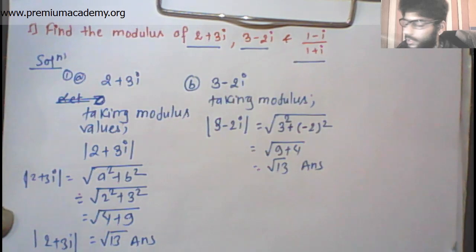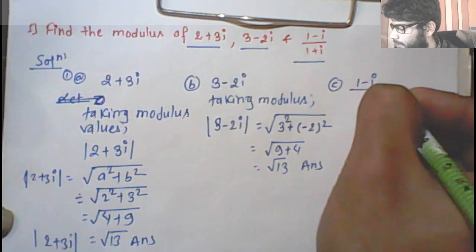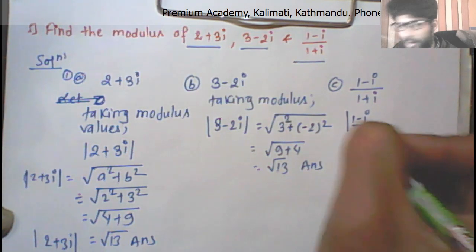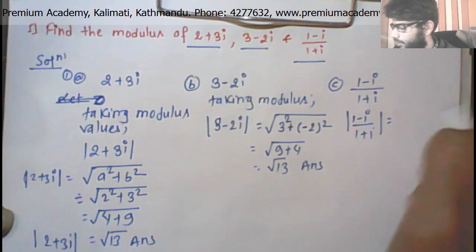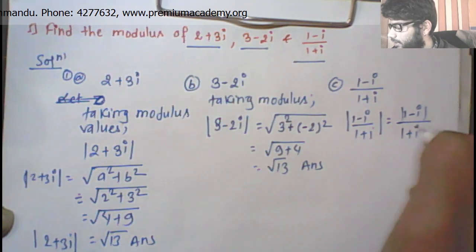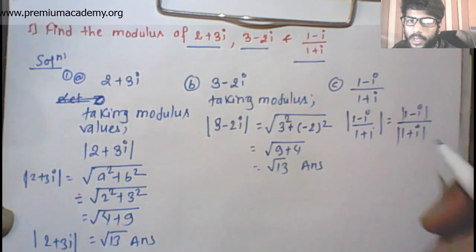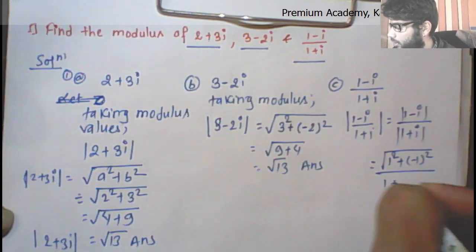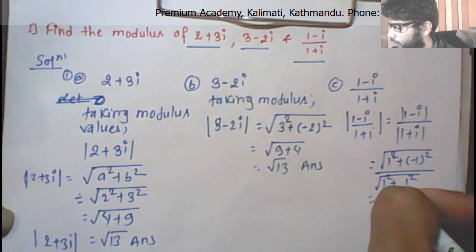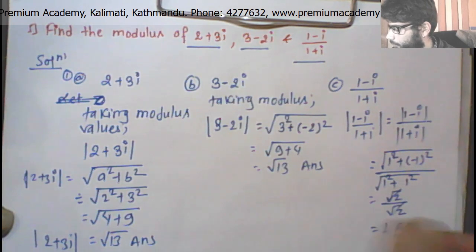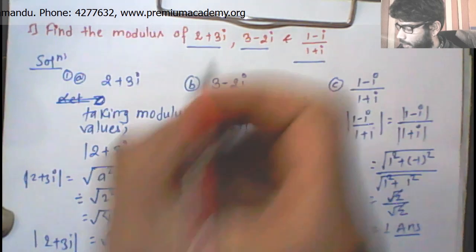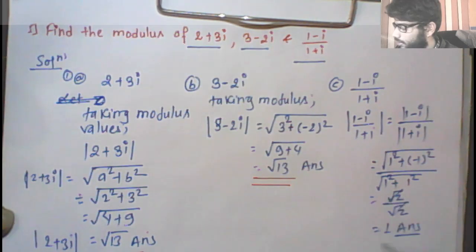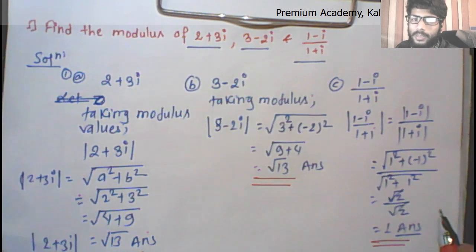The third question is: find the modulus of (1 minus i) divided by (1 plus i). We solve this step by step. The modulus of (1-i)/(1+i) equals the modulus of (1-i) divided by the modulus of (1+i), giving the result 1.